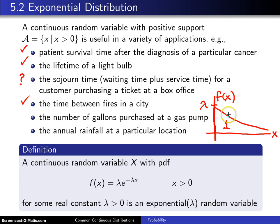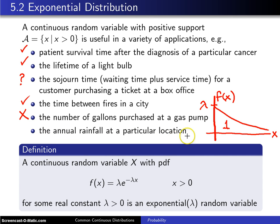The number of gallons purchased at a gas pump is a positive random variable, but do most people purchase only a half or a quarter of a gallon? Are there a lot of very small purchases? Probably not — this would probably look more bell-shaped in terms of gallons purchased, so I'll put this as a no for the exponential model. Similarly, annual rainfall at a particular location is usually not heavily skewed toward very small values; it tends to be more bell-shaped, so I'll put a no for annual rainfall as well.